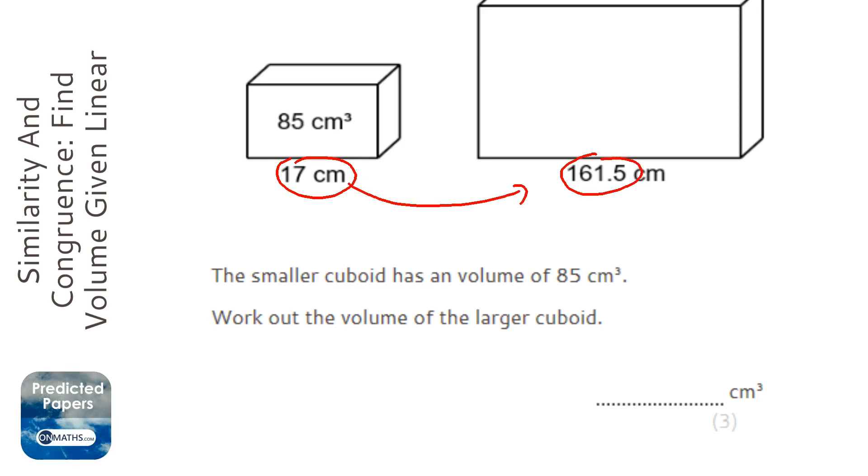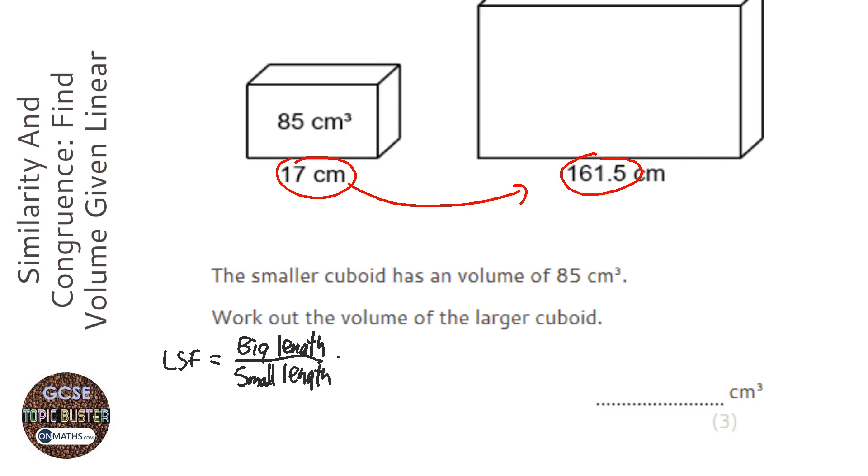So what do I times 17 by to get to 161.5? To work out the linear scale factor we do big length over small length. In this case the big length is 161.5. The two lengths need to be corresponding, which means in the same location in both of the cuboids. So 161.5 over 17, which is 9.5.